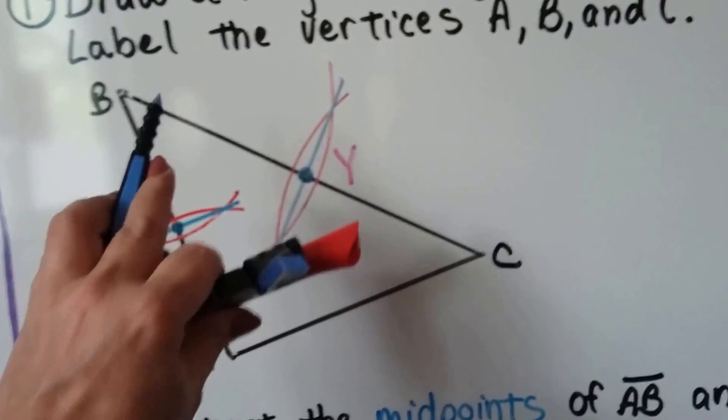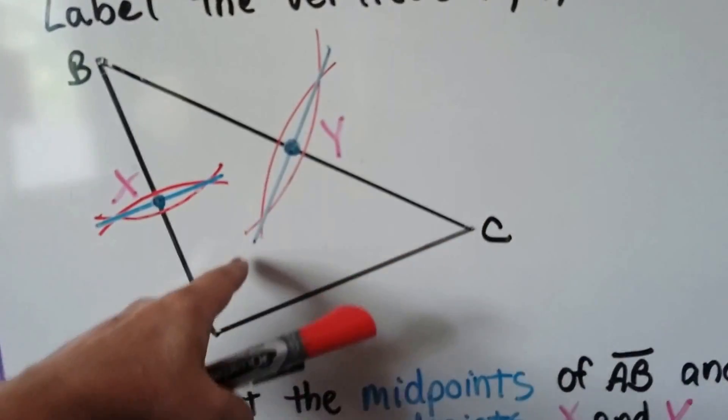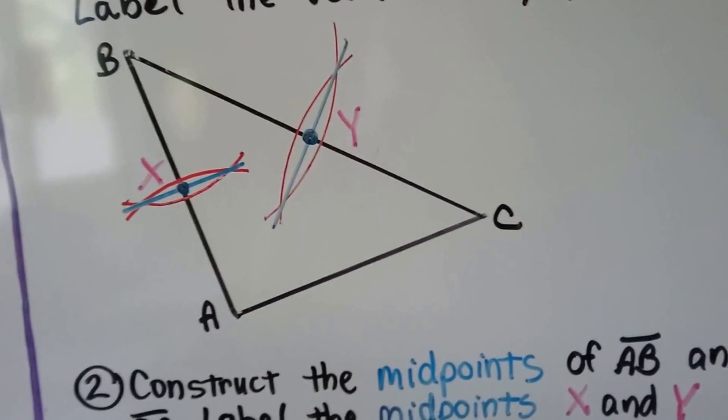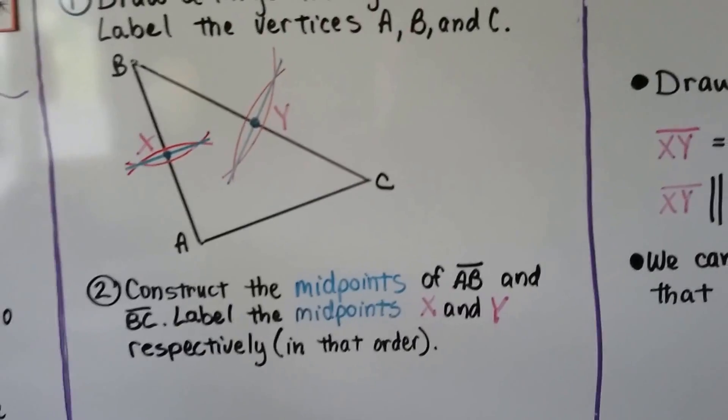We can open it a little bit more, make a big arc, put it on C, make a big arc, draw a line where the two arcs intersect, and where it hits BC is the midpoint. And we can label those X and Y respectively in that order.